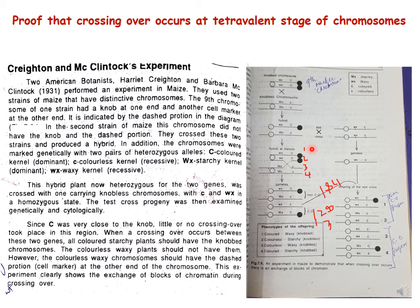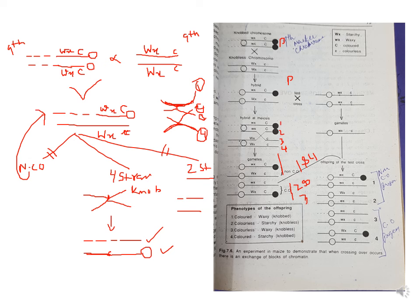When crossing over does occur between these two genes, all the colored starchy plants should have knob chromosomes. Say crossing over occurs between the second and third chromatids of the F1 hybrid. The first and fourth chromatids have not undergone crossing over, so they are non-crossovers. The second and third chromatids are recombinants — crossover products. Thus we obtain two non-crossover products and two crossover products.